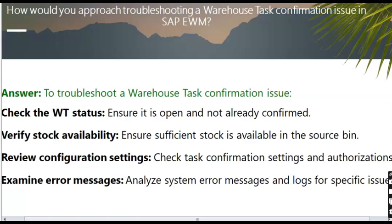How would you approach troubleshooting a warehouse task confirmation issue in SAP EWM? To troubleshoot, check the warehouse task status to ensure it is open and not already confirmed, verify stock availability to ensure sufficient stock is available in the source bin, review configuration settings including task confirmation settings and authorizations, and examine error messages and logs for specific issues.